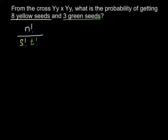Now we just have to multiply the left part of the formula by the probability of each event. We multiply by the probability of event s raised to the power s, and by the probability of the second event raised to the power t. As you see, this formula is simple.